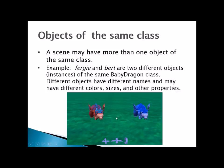You can have more than one of the same objects. For example, you could have two baby dragons named Fergie and Bert — you can have as many as you want: 10, 20, however many. They can all look the same, or be different colors and different sizes. Each object is its own instance.